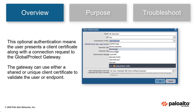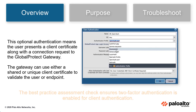This optional authentication means the user presents a client certificate along with a connection request to the Global Protect gateway. The gateway can either use a shared or unique client certificate to validate that the user or endpoint belongs to your organization.